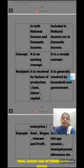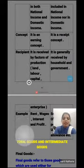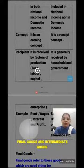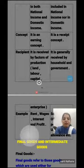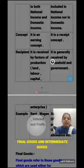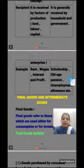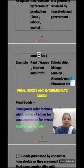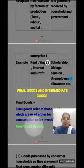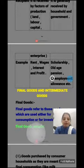Regarding recipient, factor income is received by factors of production — land gets rent, labor gets wages, capital gets interest, and enterprise gets profit. But transfer income is generally received by households and the government. Examples of factor income are rent, wages, interest, and profit. Examples of transfer income are scholarship, old-age pension, and unemployment allowance.